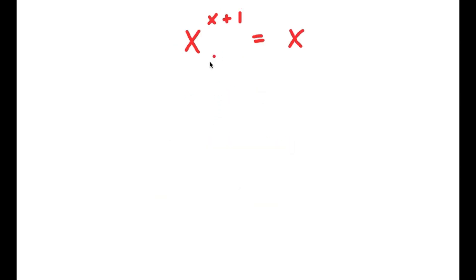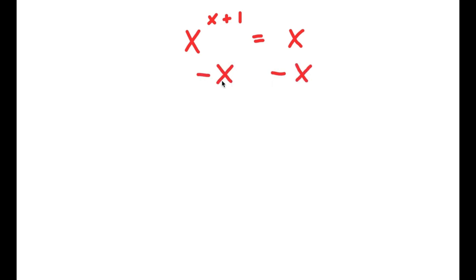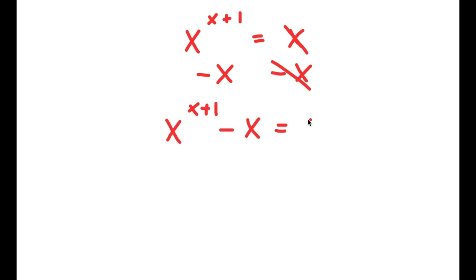In this problem, I have x to the power of x plus 1 is equal to x. To solve this, I'm going to start by subtracting x on both sides. These two cancel out, and I'm left with x to the power of x plus 1 minus x is equal to 0.